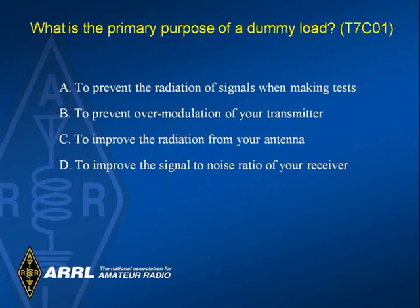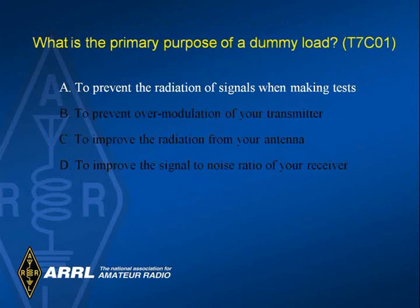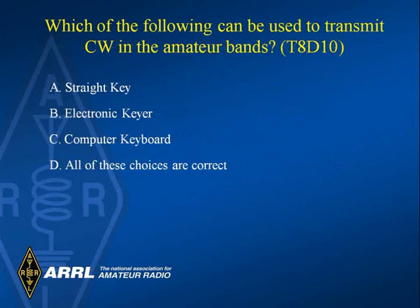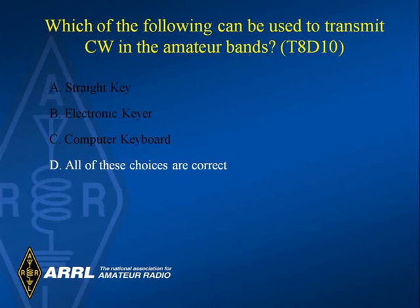What is the primary purpose of a dummy load? To prevent the radiation of signals when making tests. Which of the following can be used to transmit CW in the amateur bands? Answer D: All these choices are correct.